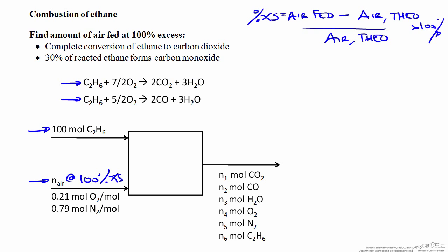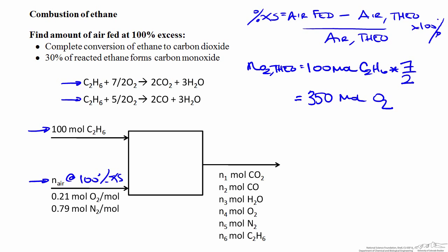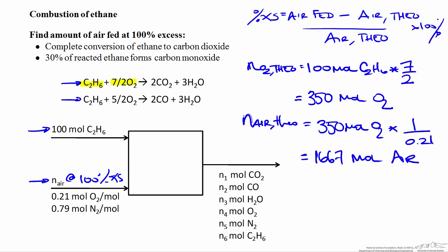The percent excess depends on the air fed and the air theoretically needed. The theoretical requirement is based on the oxygen content required to consume all of the fuel. From the complete combustion reaction, every mole of ethane requires 7.5 moles of oxygen. Multiplying 100 moles of ethane by 7.5 gives 750 moles of oxygen needed. Since air is 21% oxygen by mole, dividing 750 by 0.21 gives a theoretical requirement of 1,667 moles of air.